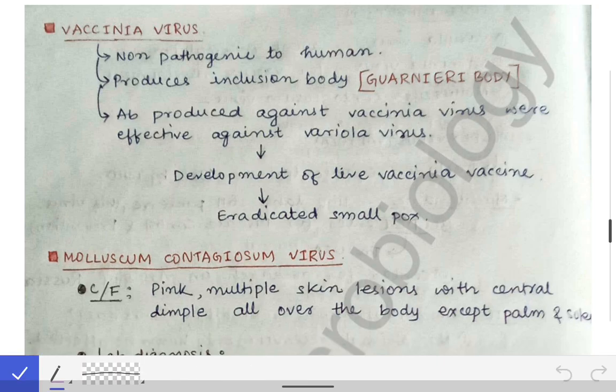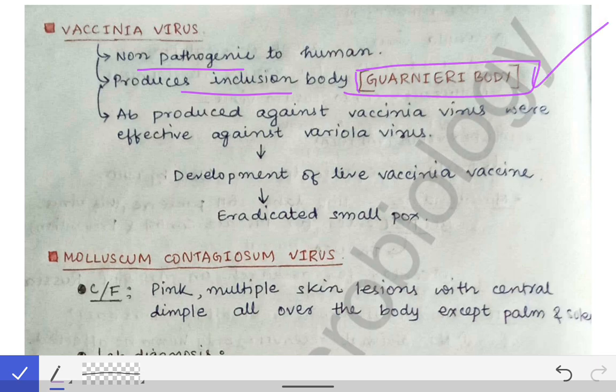Now we will talk about the vaccinia virus, which is used to produce the vaccine against smallpox. It is non-pathogenic to humans, which is why it was used for producing the vaccine. The inclusion bodies produced by the vaccinia virus are called Guarnieri bodies — a very important MCQ point. The antibodies produced against vaccinia virus were effective against the variola virus, forming the basis for the smallpox vaccine.